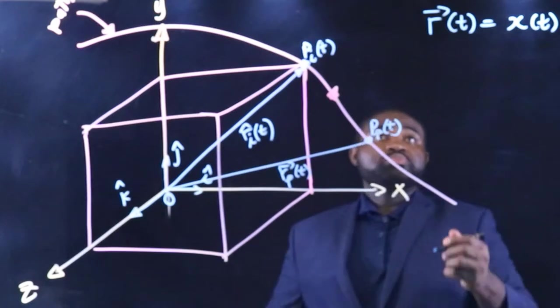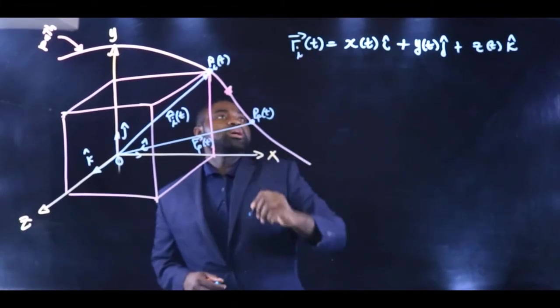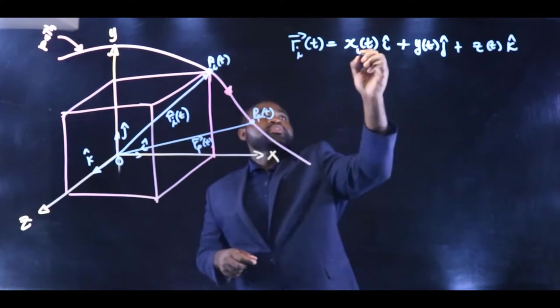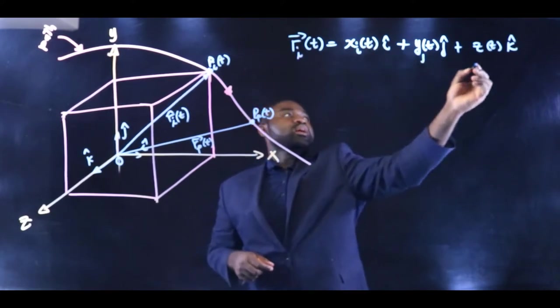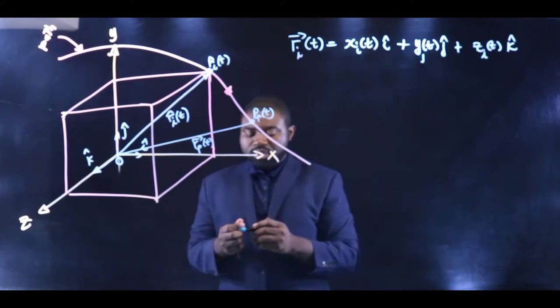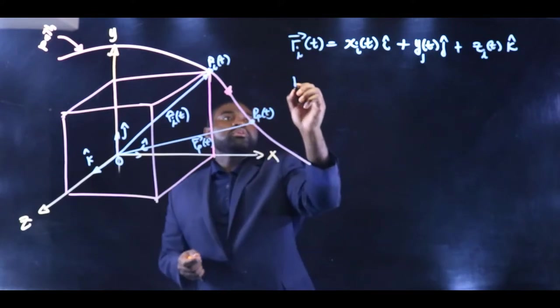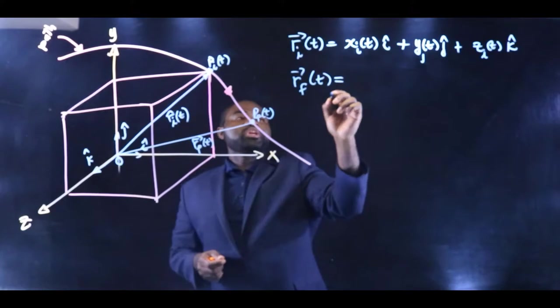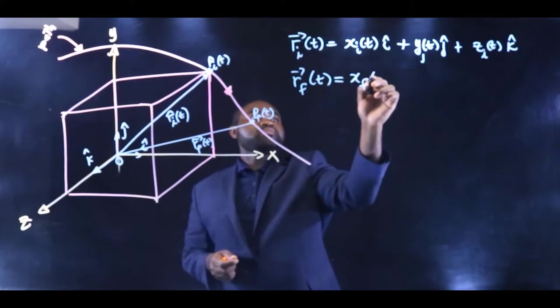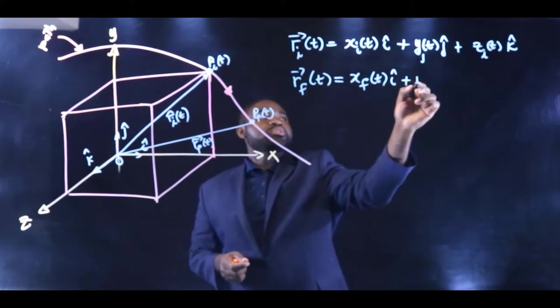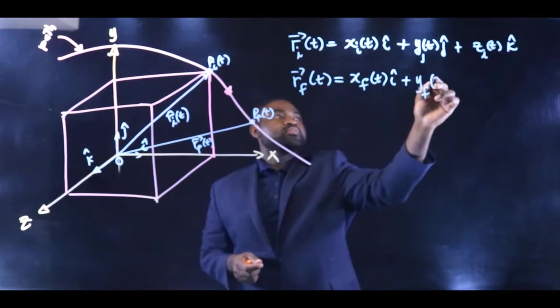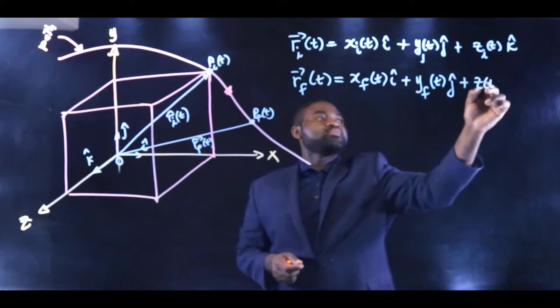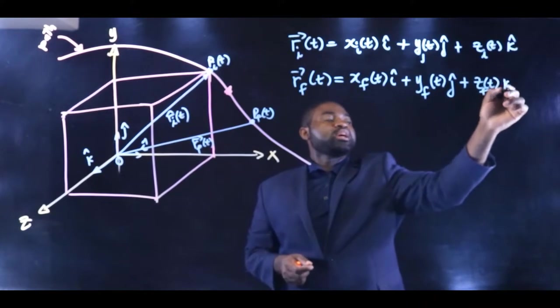This would mean that you will have the position vector for the initial point, which is Ri, and the position vector Rf for the final point will be equal to Xf(t)I + Yf(t)J + Zf(t)K.